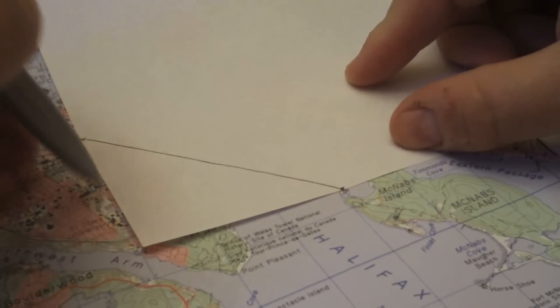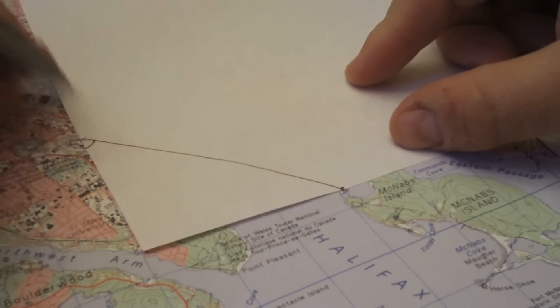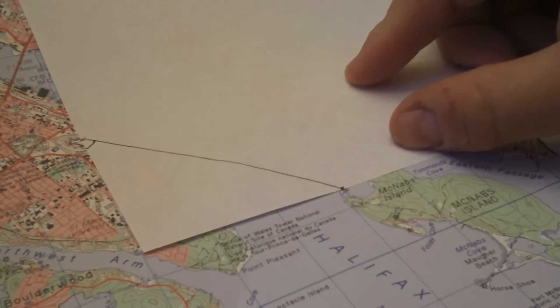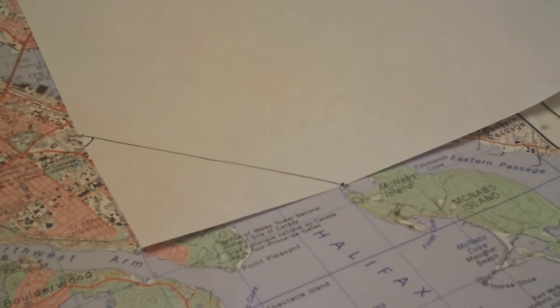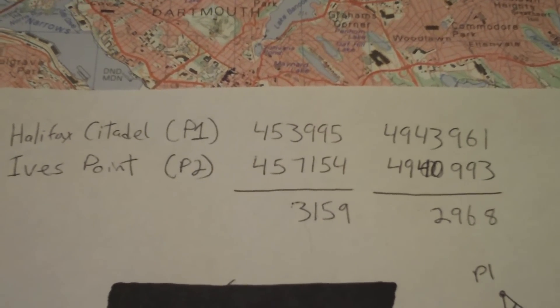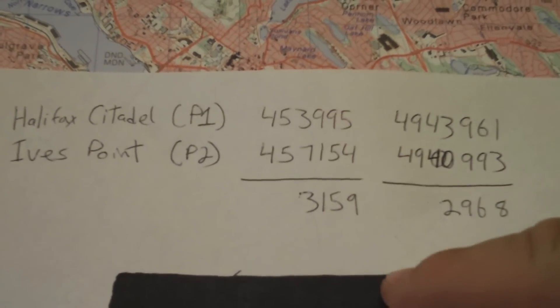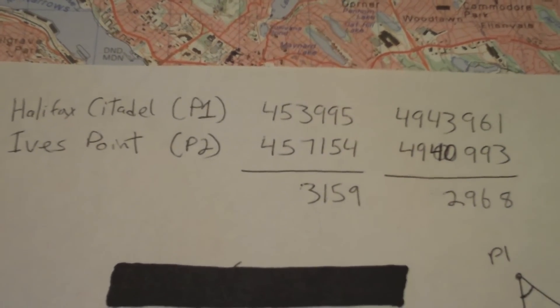So now we're going to use this triangle again and figure out the angle or the direction of travel. So let's get started. In order to get started, we do what we did in part one: we take our easting and northing and we subtract the numbers to get the positives, so we have resulting numbers here.